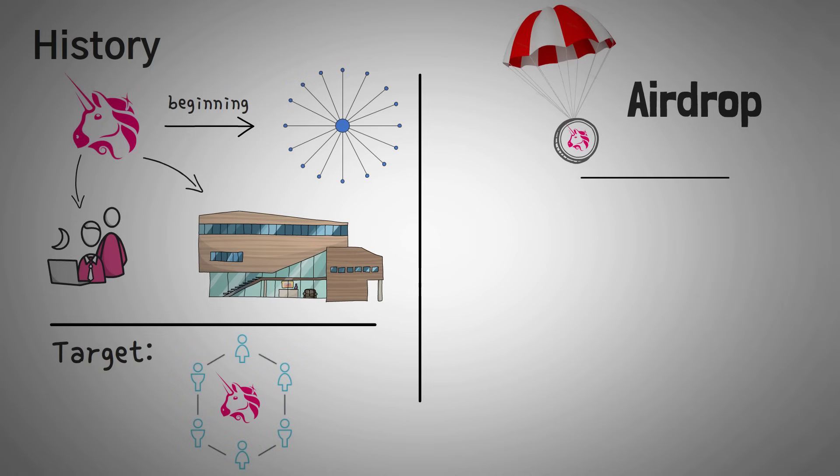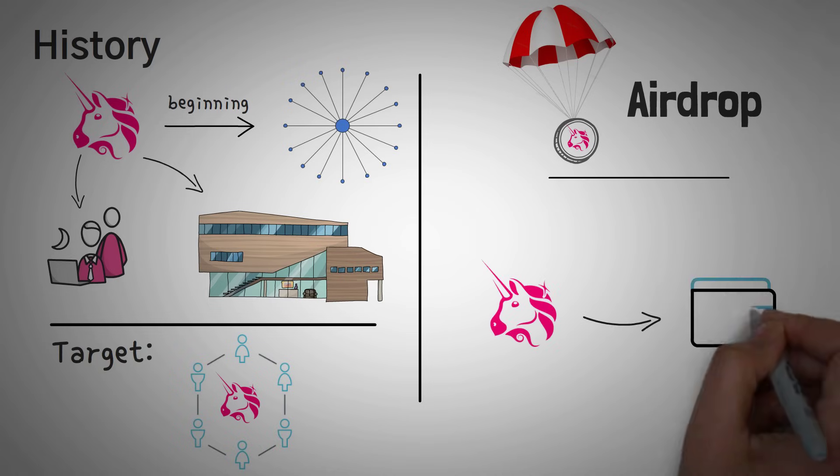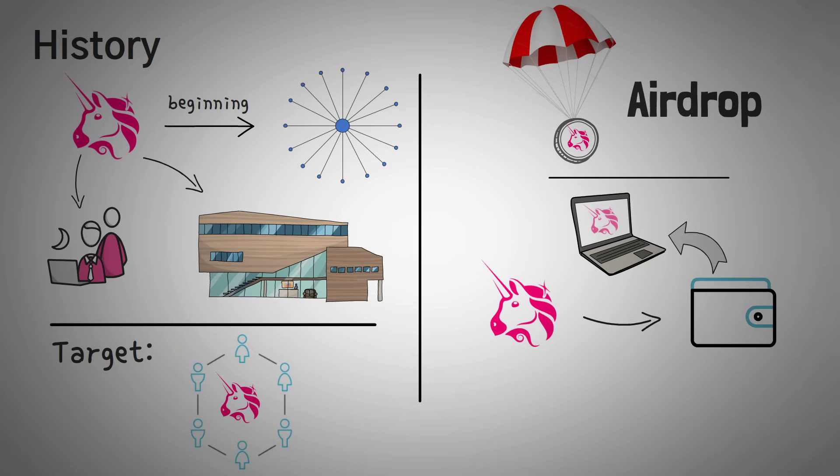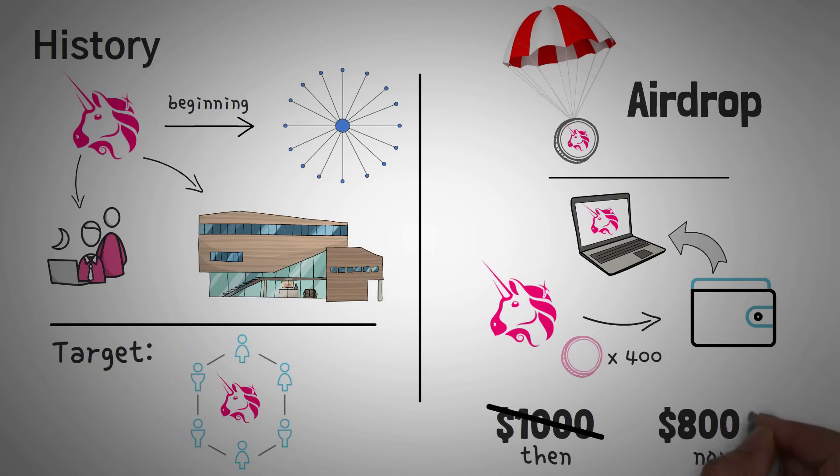This is where the airdrop came in. Uniswap gave every wallet address that interacted with their application around 400 Unitokens. At the time, this was worth around $1,000. Imagine getting free $1,000 for trying out an application. For those that held their token, they are now worth around $8,000.